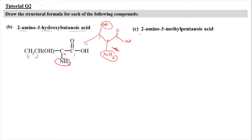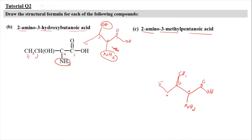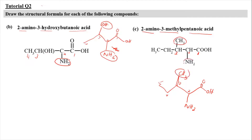For tutorial question 2c, we draw 2-amino-3-methylpentanoic acid. Pentanoic acid has 5 carbons. Carbon 1 carries the carboxyl group. At carbon number 2, we attach the amino group. At carbon number 3, we attach a methyl group, which is CH3. You can draw this as a skeletal structure, condensed structure, or expanded structure — both representations are correct and consistent.